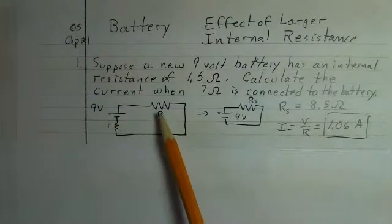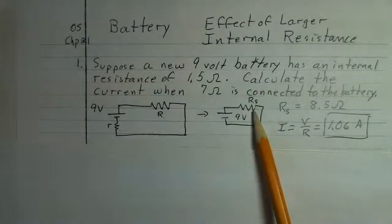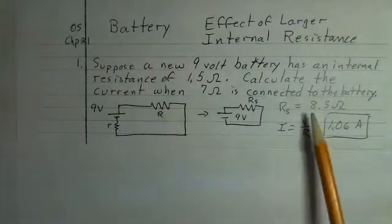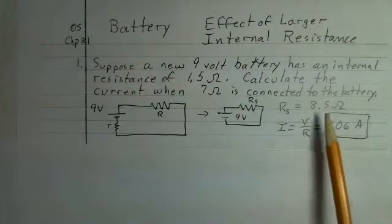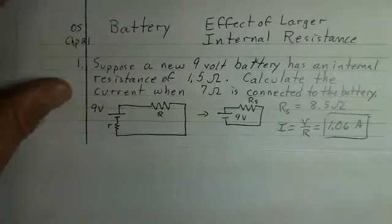The external resistor and the internal resistance are in a series combination. I'm drawing one series equivalent resistance here, and external is 7, internal is 1.5, so our series resistance is 8.5 ohms. And our current out of the battery would be 1.06 amps.